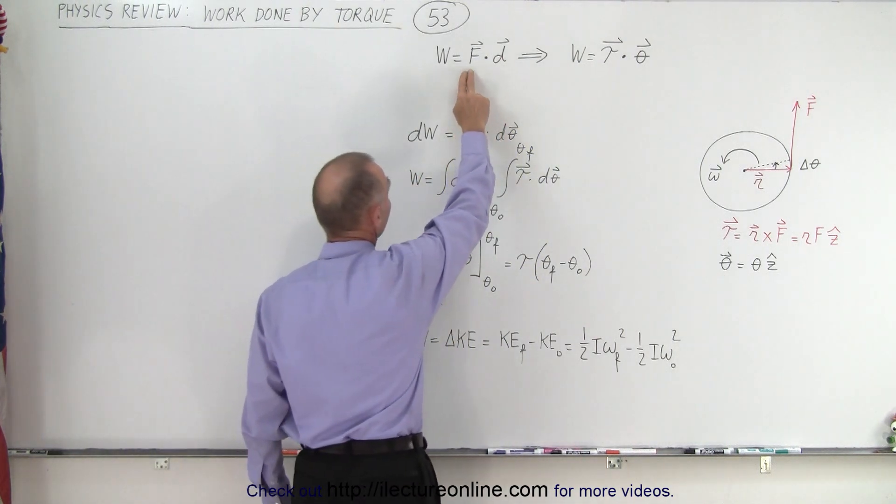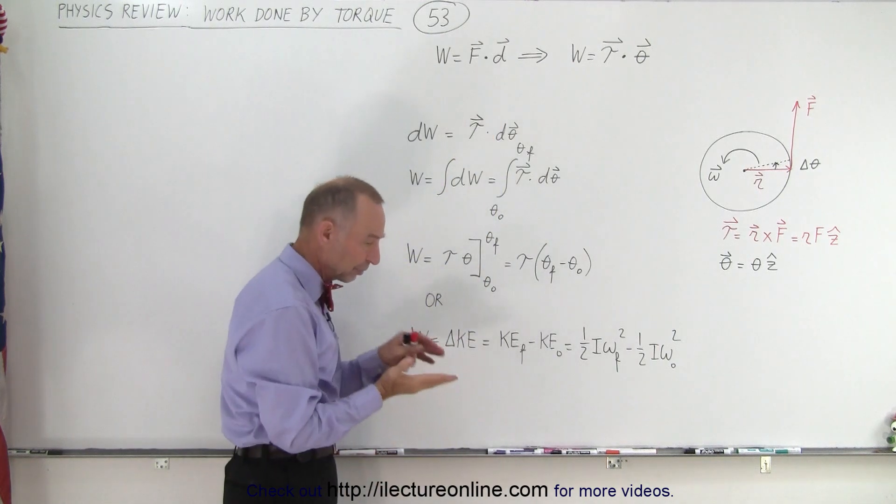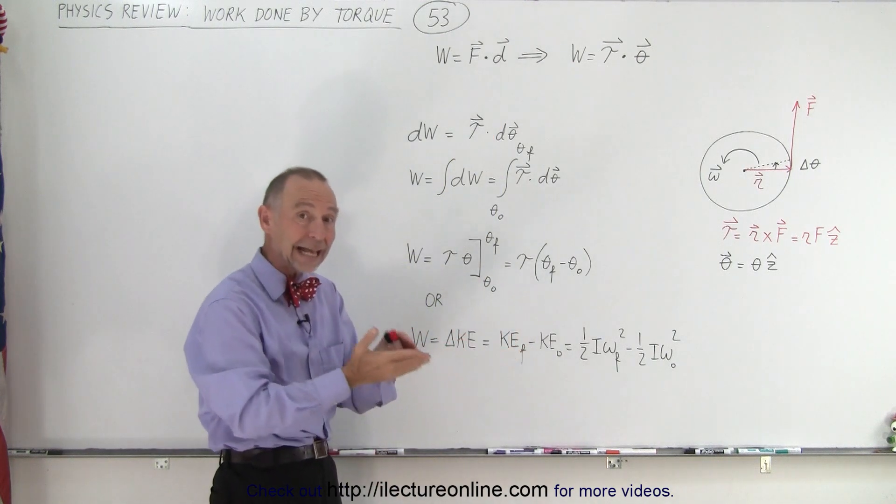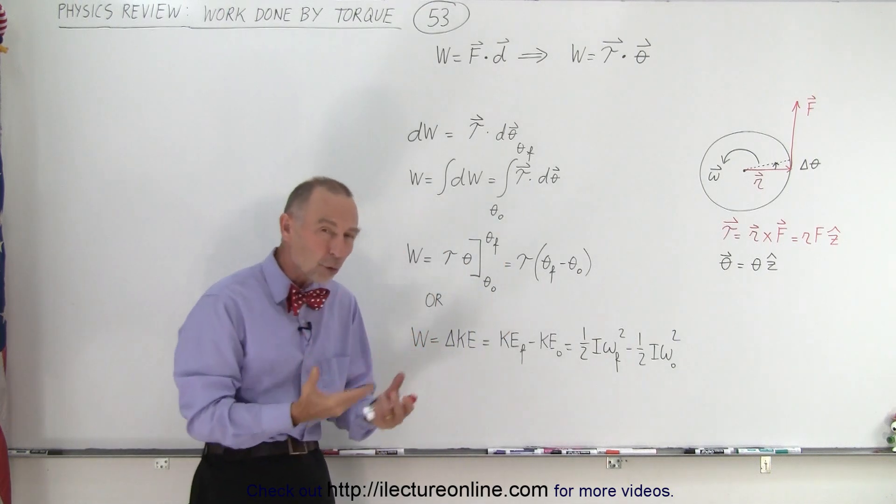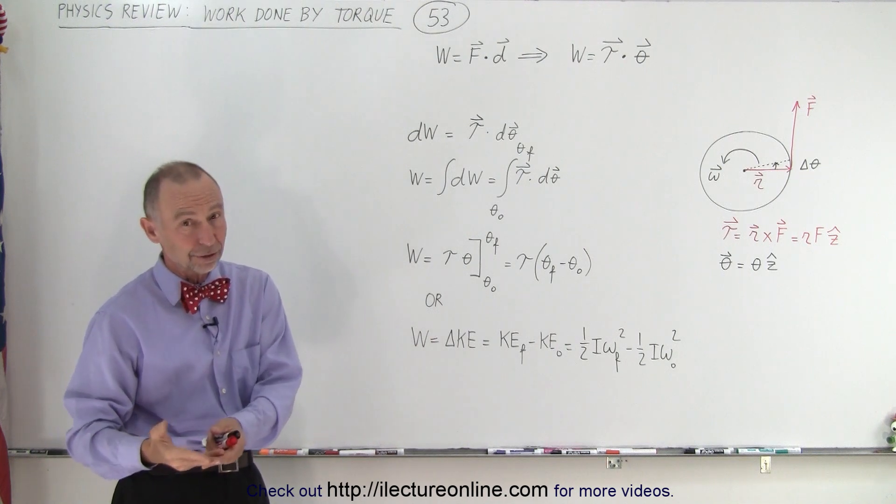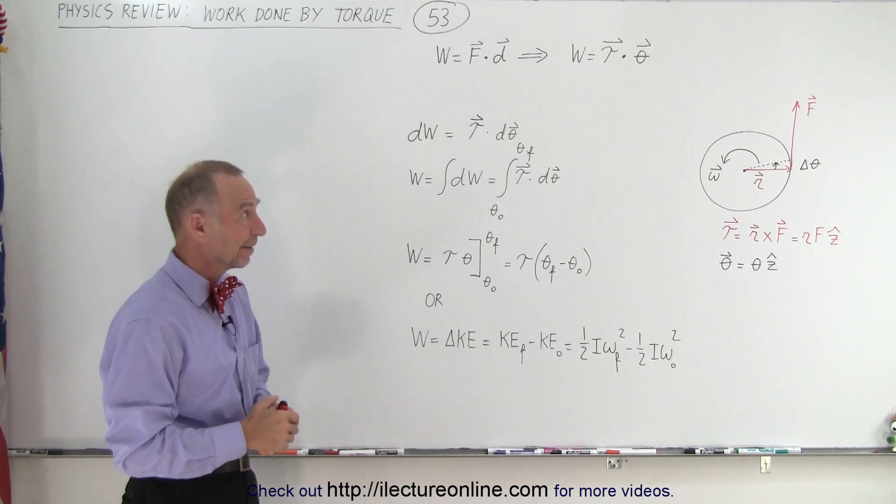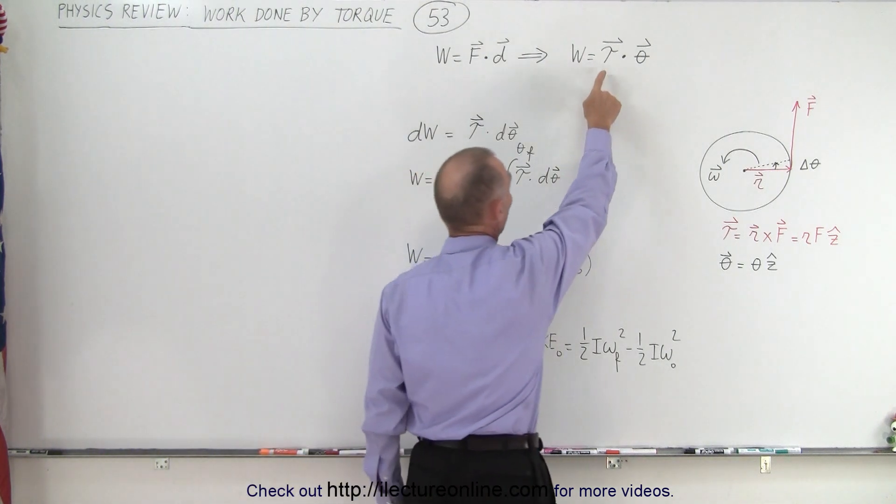Notice that it's a dot product between the force and the displacement. If they're pointing in the same direction, the angle between them is zero, and we have the magnitude of the force times the magnitude of the displacement times the cosine of the angle between them. If it's zero, cosine of zero is one. The same goes for work done by torque.